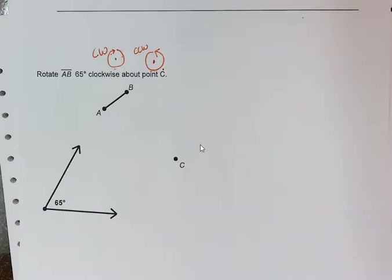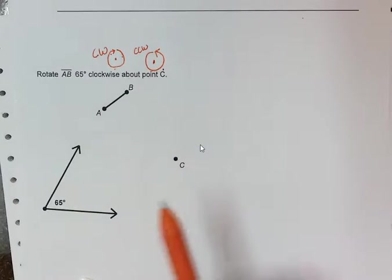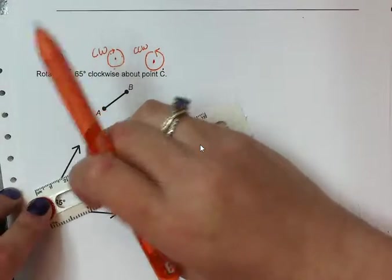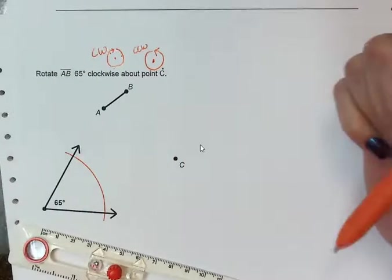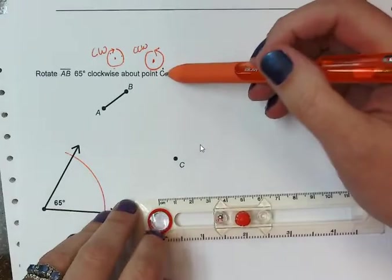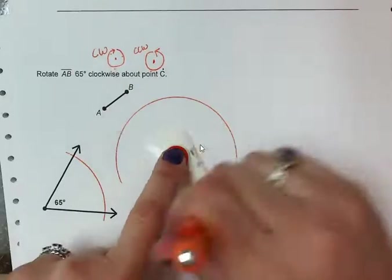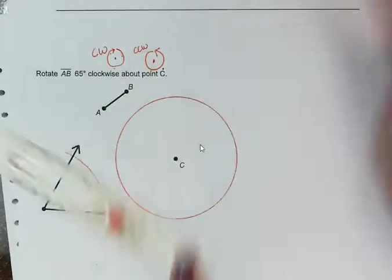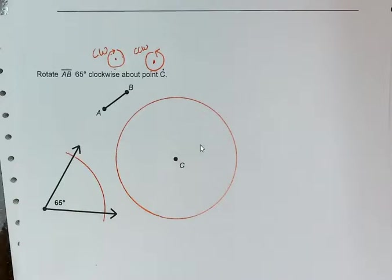Now, to do this construction, you're first going to make an arc across the angle. It could be any size you want, but bigger is always better. It takes away a lot of the human error. You've got to make sure that it hits both sides of the angle. Without changing your radius, you are going to make a circle around the point that you are rotating around. So this circle has the same radius as the arc that we drew across the angle. And we're going to use this circle and arc multiple times. That's actually step one and step two in our directions.